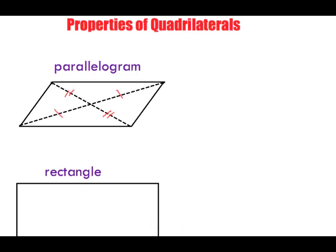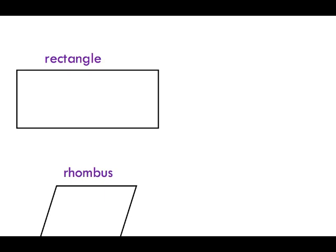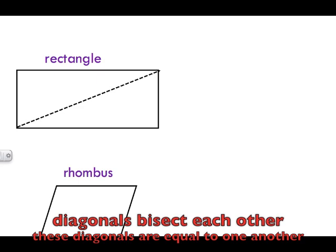In a rectangle, diagonals will bisect one another, very similar to what we did with the parallelogram. However, not only will they bisect one another, but all the diagonals are actually equal to one another. So this length equals that length, which also equals that length and that length. This property only works in rectangles.